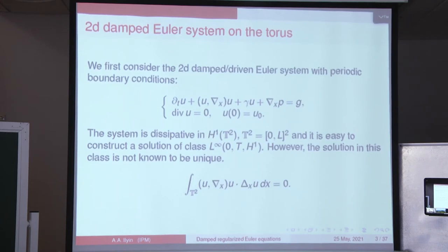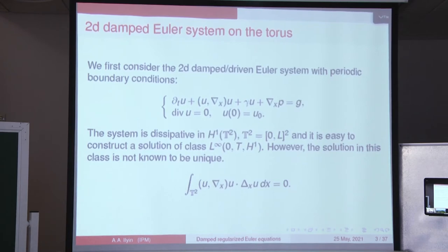A little bit of history. Let us consider the two-dimensional Euler equations on the torus. This is the equation, and we added a damping term, a homogeneous damping term, which makes the system dissipative. In fact, it was Valentin Baloch-Dimnikov who told me that in atmospheric models, the dry friction is much more important than the molecular viscosity term.